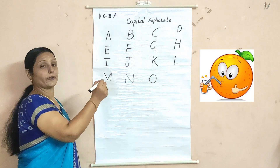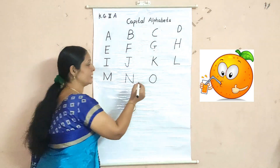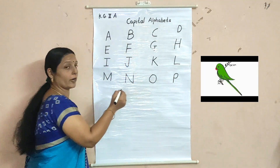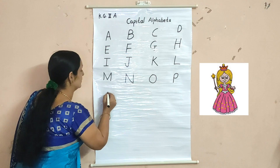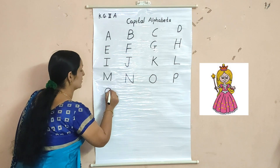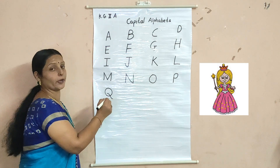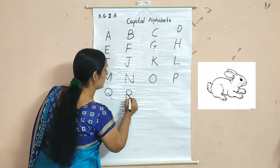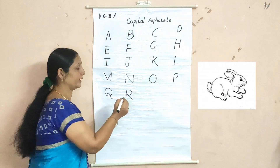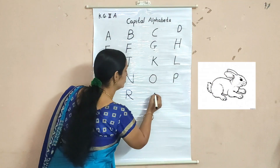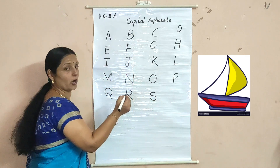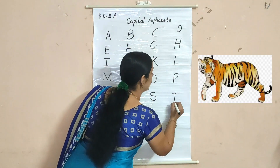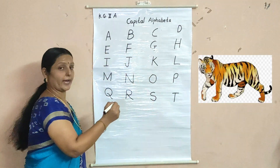N for nest, O for orange, P for parrot, Q for queen, R for rabbit, S for ship, T for tiger.